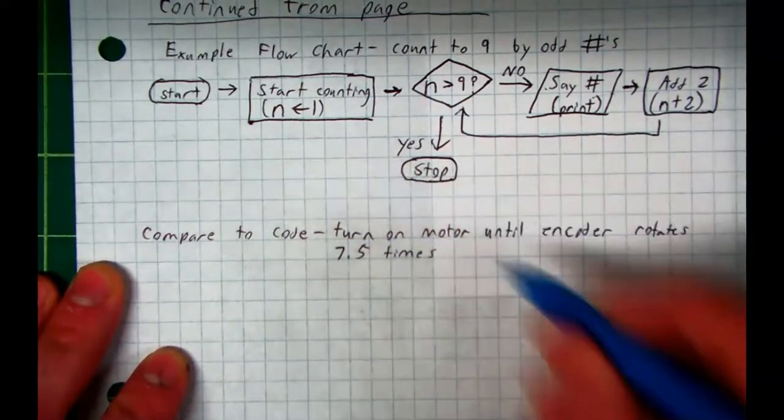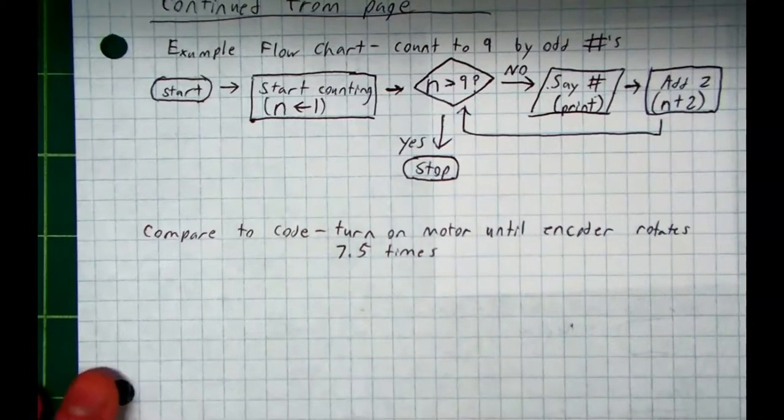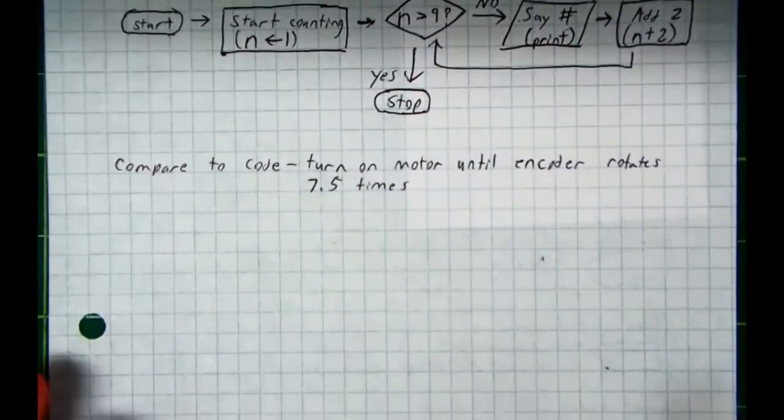Let's say we want to turn a motor on until an encoder has rotated 7.5 times. Now, there are two ways, at least two ways, that you will use in this class to have Robot C read the encoder.